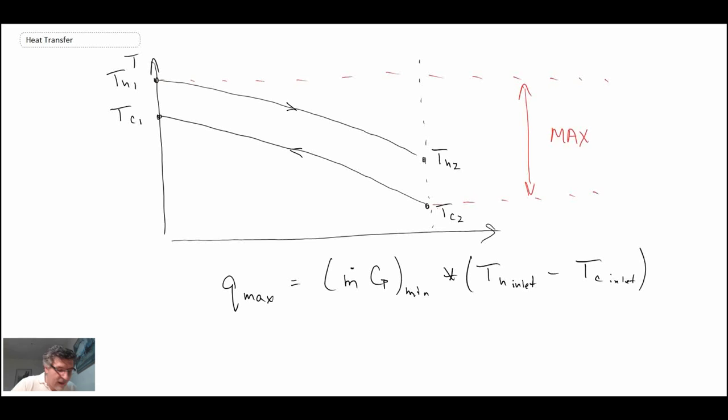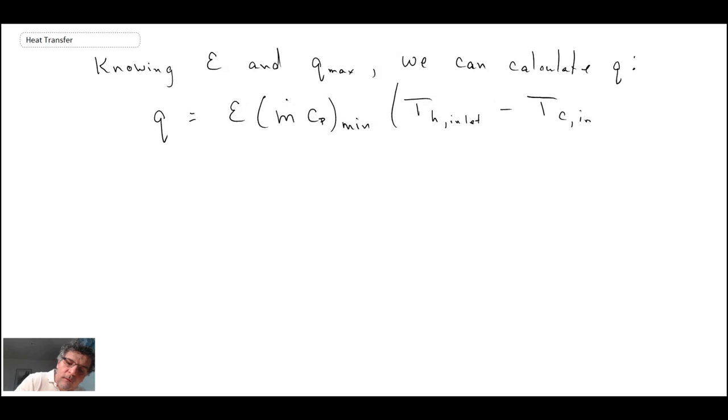And so with that, if you know your effectiveness and if you know this value of Q max, you can determine the heat exchange that is occurring within your heat exchanger. And so we calculate Q in the following manner then. Okay, so that is the way we evaluate the heat transfer, if you know your effectiveness and you know your minimum fluid.